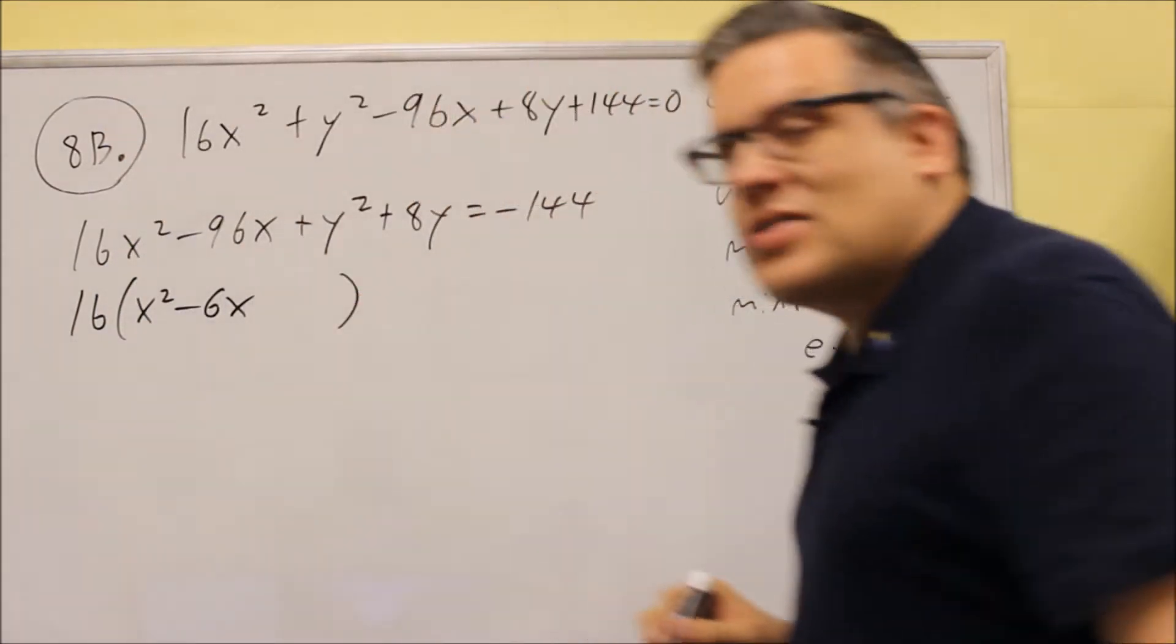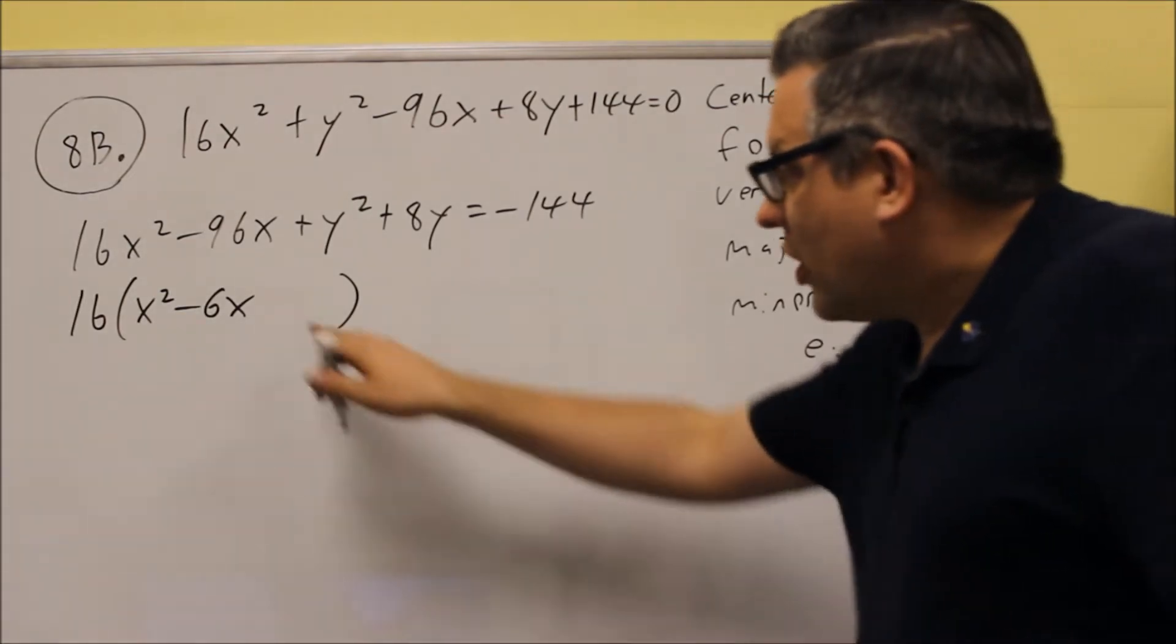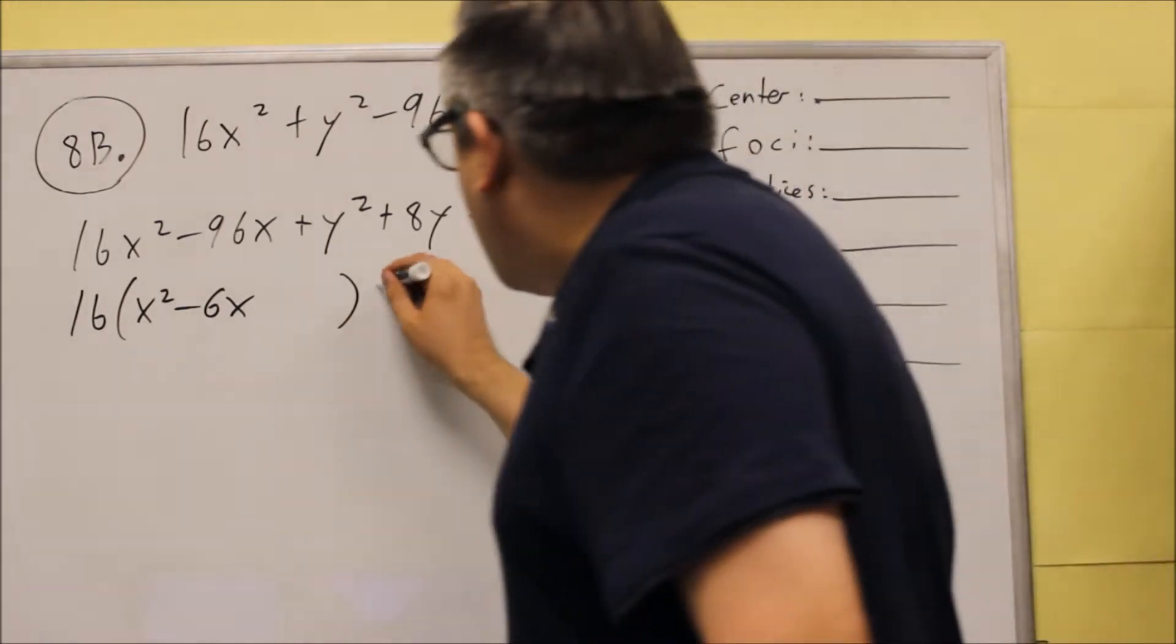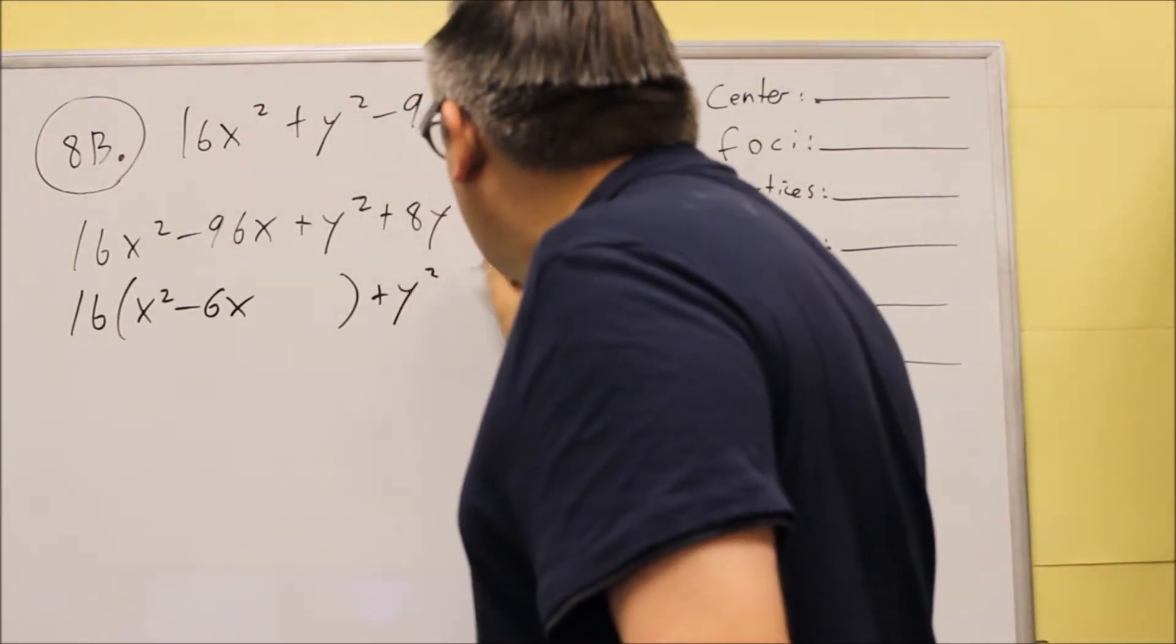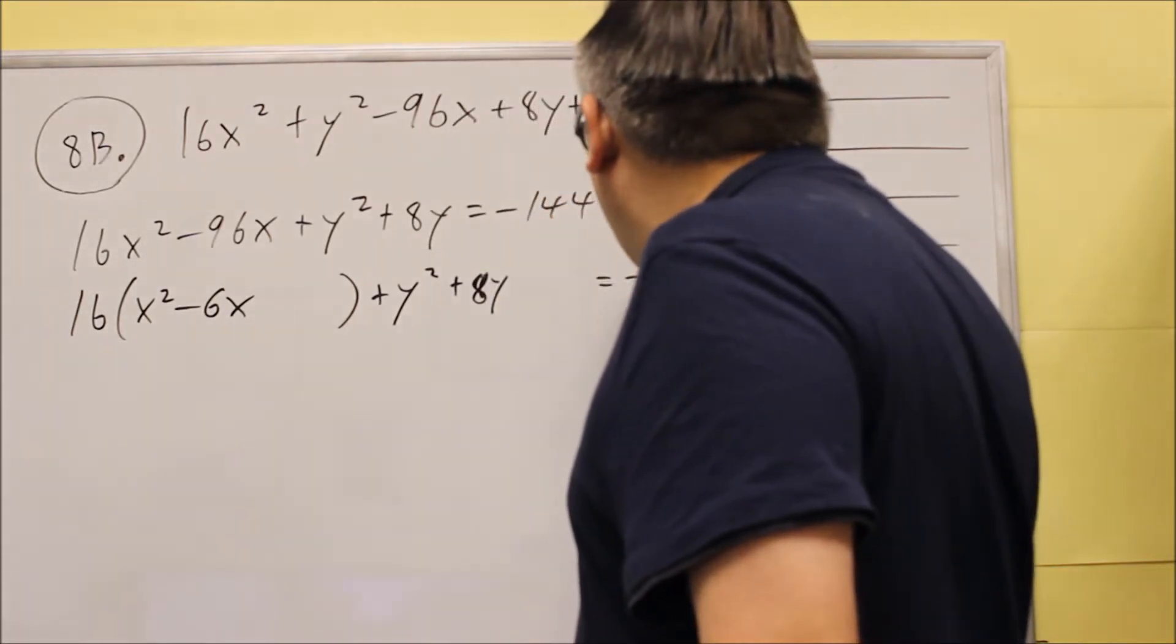Now I want to leave a space in there because this is where we're going to do the complete the square step later. We'll get a number that's going to end up being added inside there. So we want to leave that space alone. Then we have plus Y squared, 8Y, and then nothing, and it equals 144.